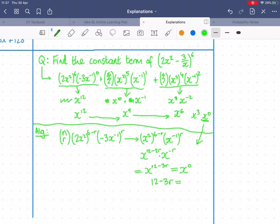And I can just equate exponents and solve for r. So, r would be 4. So, now I've found r. I can go back to my general term formula and just start filling in everything.